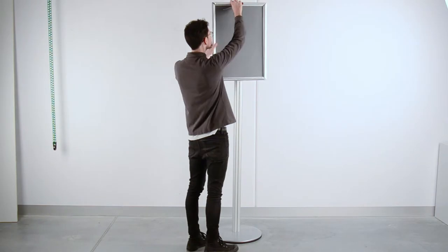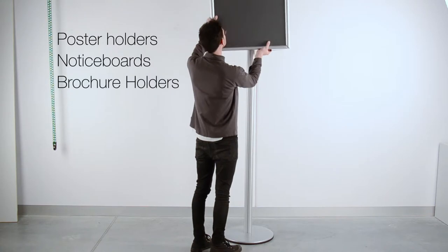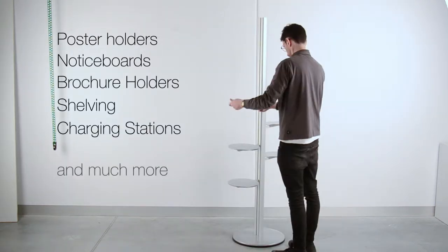Our popular Sage's range includes interchangeable poster holders, notice boards, brochure holders, product shelving and mobile device charging stations.